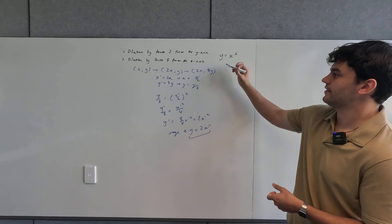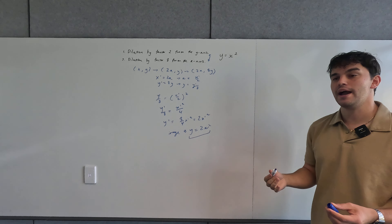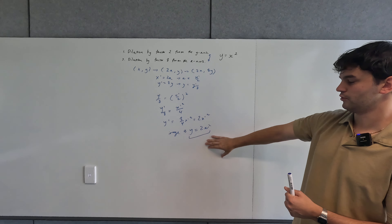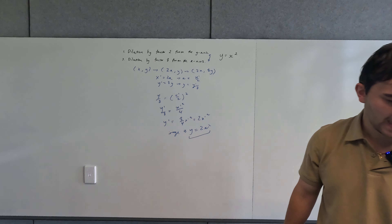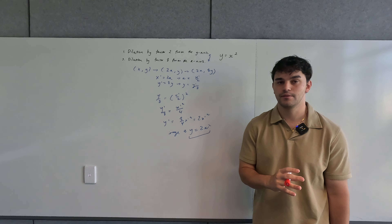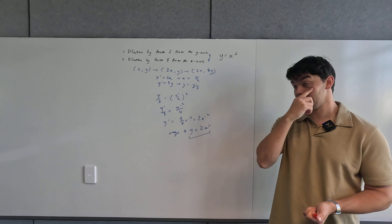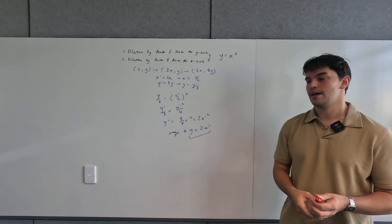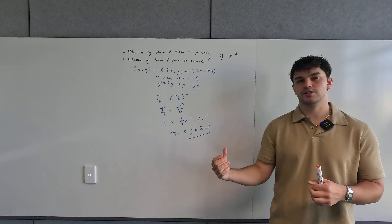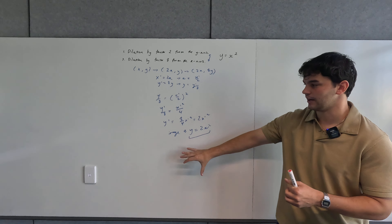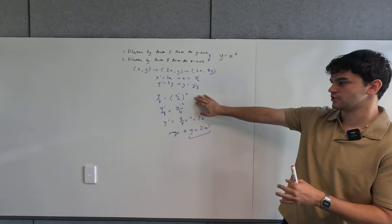So we end up getting y'/8 = (x'/2)². This is where the specific function makes a huge difference to what our final equation looks like, because we have x'/2 squared. When we expand the bracket, y'/8 = x'² divided by 2², which is four. You can imagine that if you had a different power, the number on the denominator would be completely different. Then multiplying eight to the other side, the eight and four combine, giving y' = (8/4)x'², which simplifies to y' = 2x'².